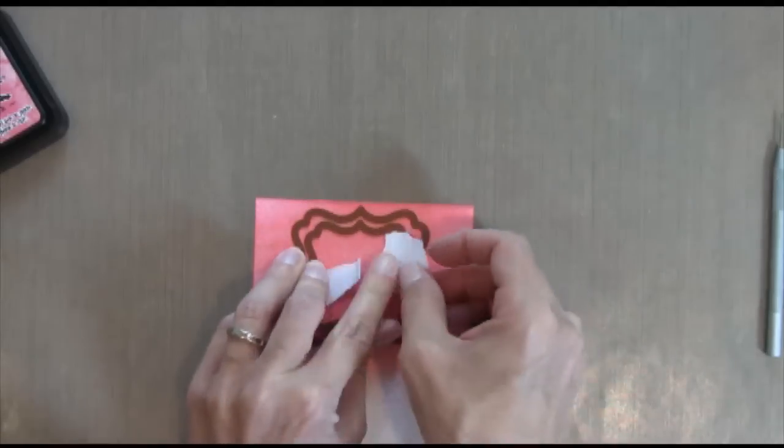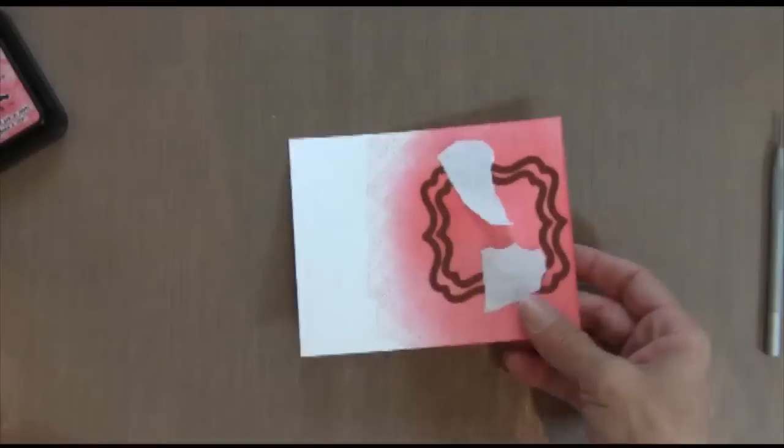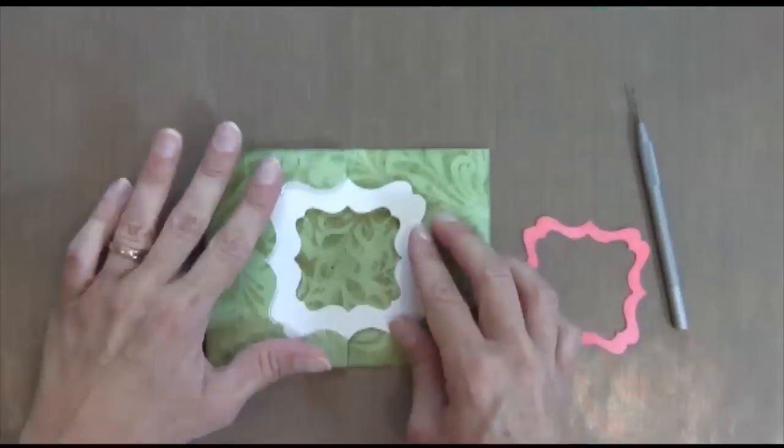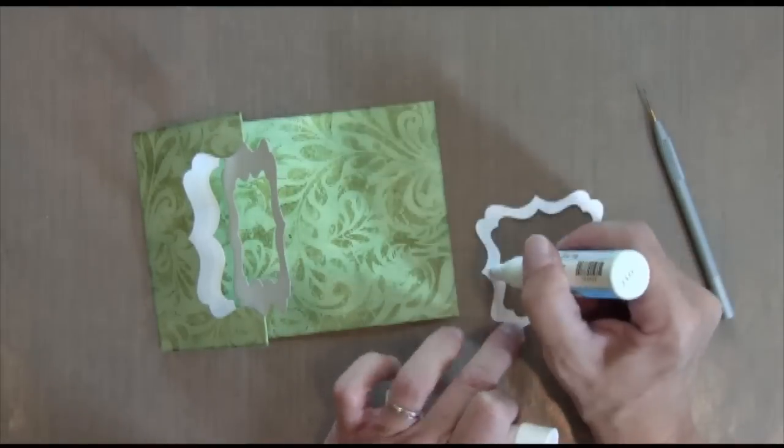I'm going to layer those two dies together, stick them on there with masking tape to hold it in place, and then I'll have a cute little frame. I'm going to glue that to the inside of the flip bit.